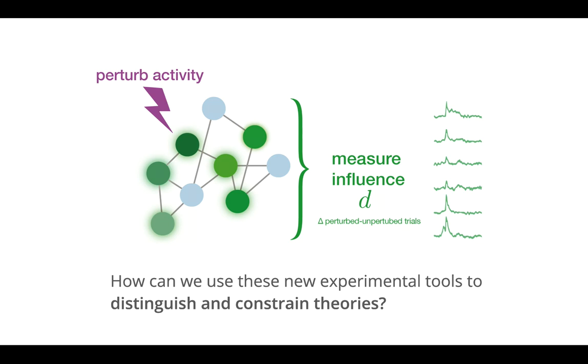It has been suggested that causal manipulations of neuronal activity in sensory cortex may provide a route to testing theories directly, but it is often unclear how exactly one would go about this. We need theory.